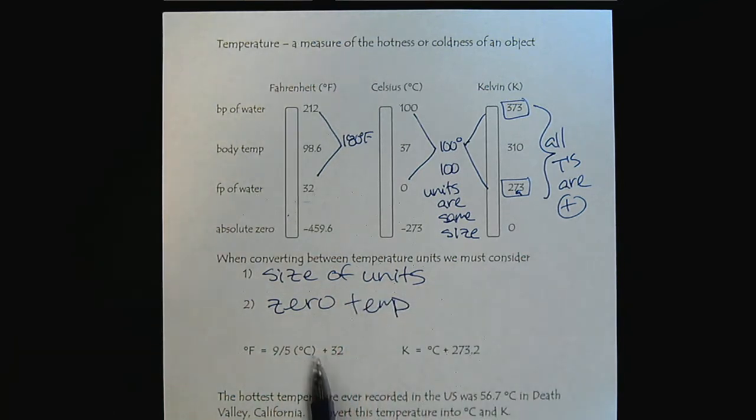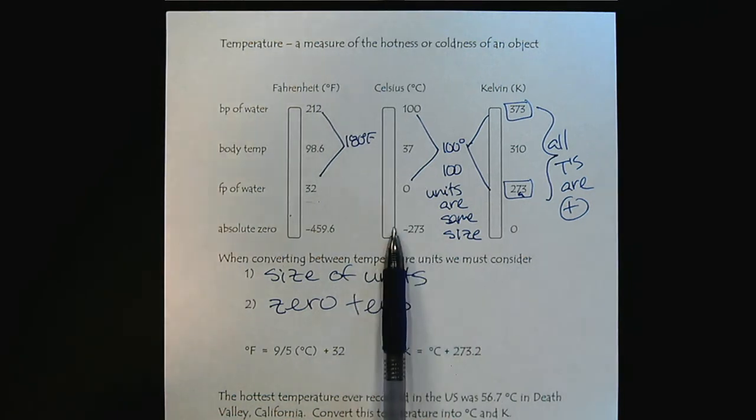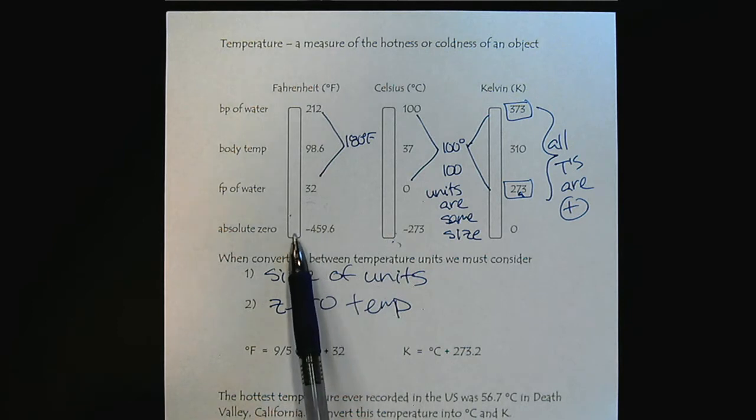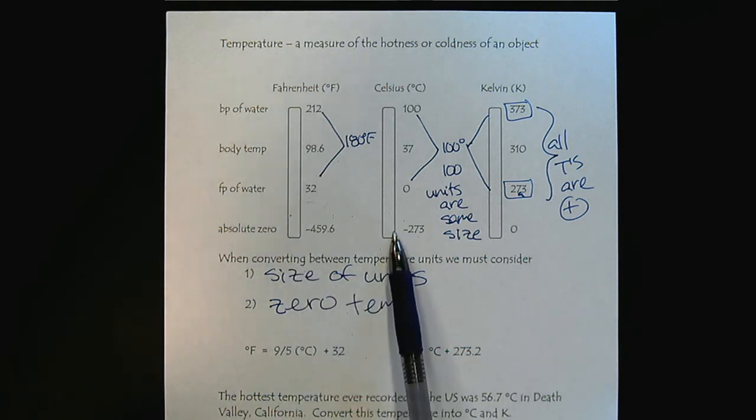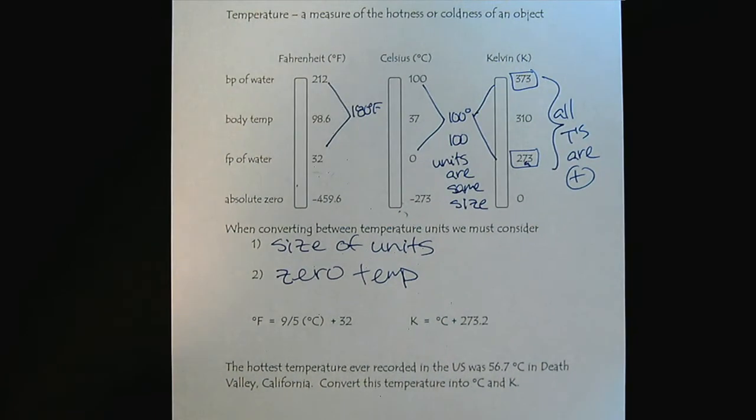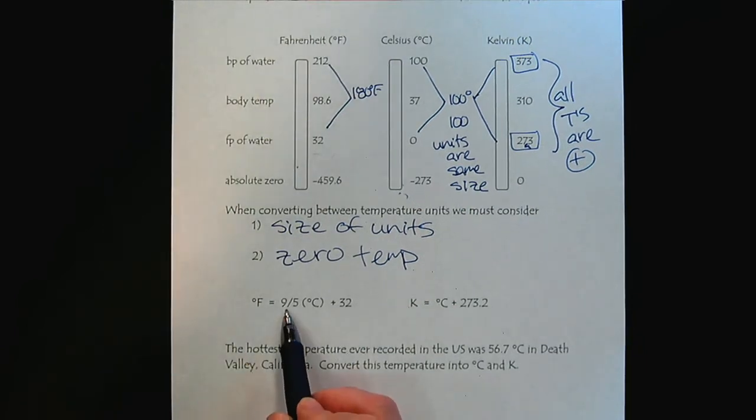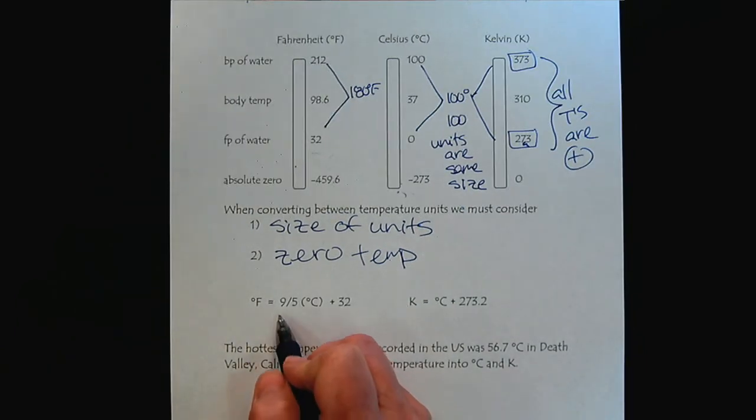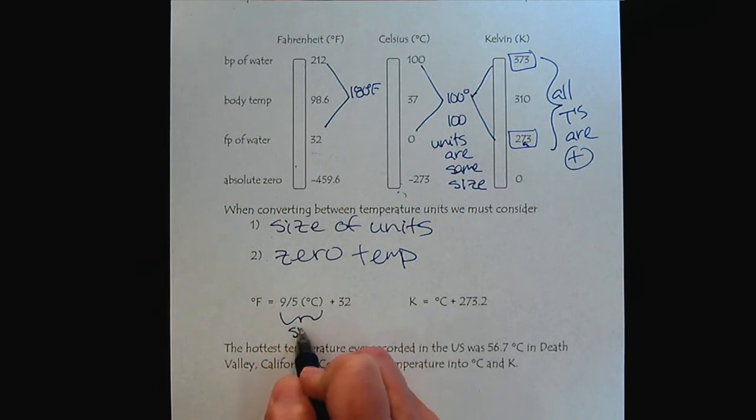Celsius tends to be the hub; I put it in the middle on purpose. Once we know Celsius, we can convert to Fahrenheit or easily convert to Kelvin. Here are the two formulas. To show how these formulas work, notice this 9/5. Where does this come from? This has to do with the size of the units.